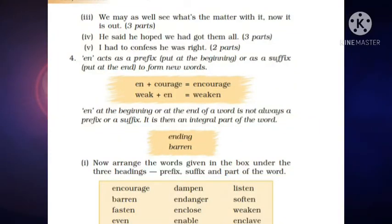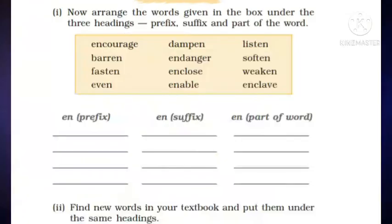Page number 136. Number four: En acts as a prefix, meaning put at the beginning, or as a suffix, meaning put at the end, to form new words. Example: En + courage = Encourage; Weak + en = Weaken. En at the beginning or end of a word is not always a prefix or suffix — it can be an integral part of the word, for example: ending, barren. Now arrange the words given in the box under three headings: Prefix, Suffix, and Part of the word. Do it yourself. Second one: find new words in your textbook and put them under the same headings.